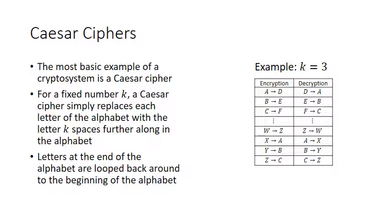Once you get to the end of the alphabet and you can't go further, you just loop back around to the beginning. So for this example, K is three. We're replacing A — if you go three spaces down the alphabet, you go B, C, and then get to D. So you replace A with D, replace B with E, replace C with F.